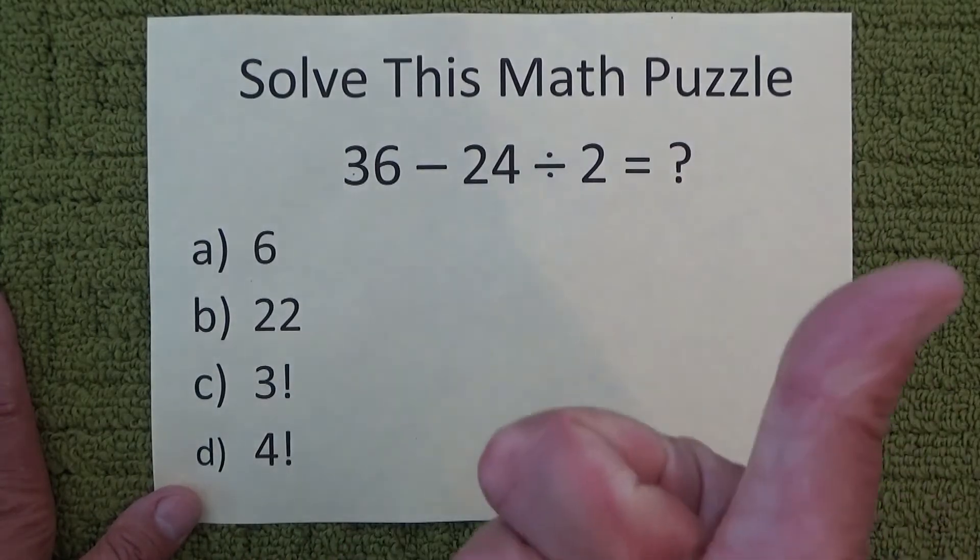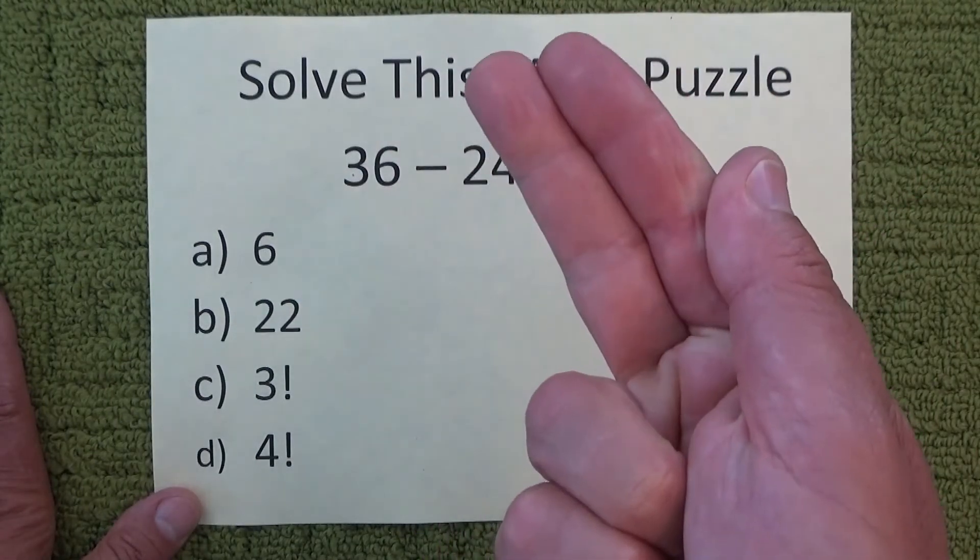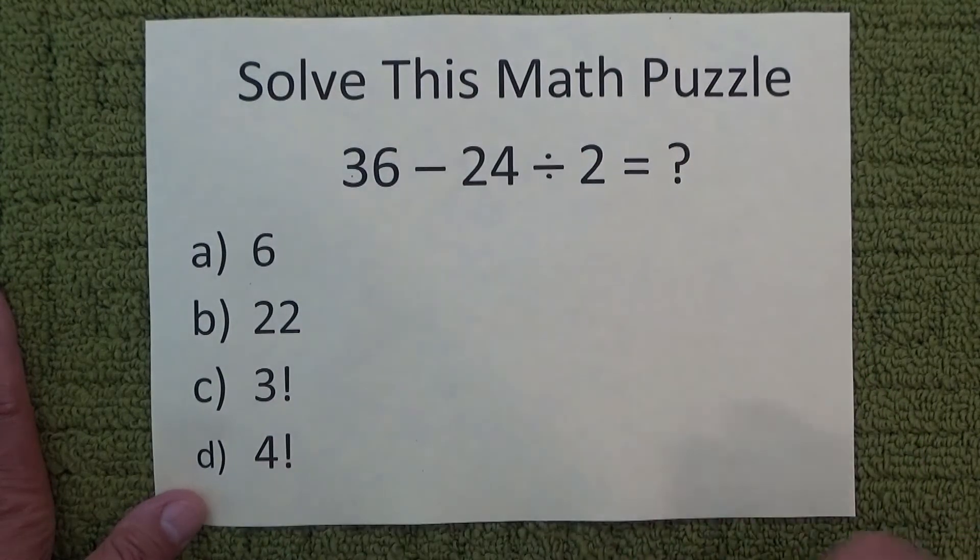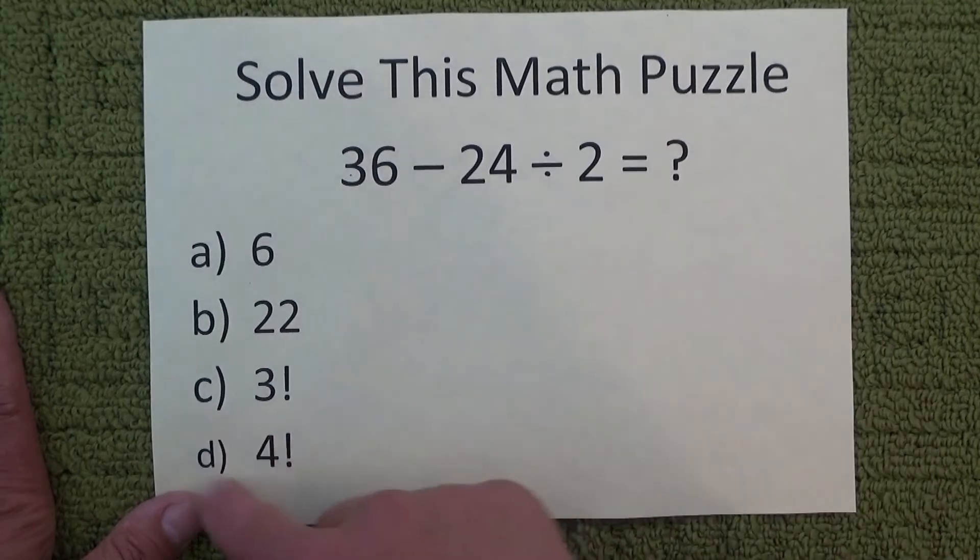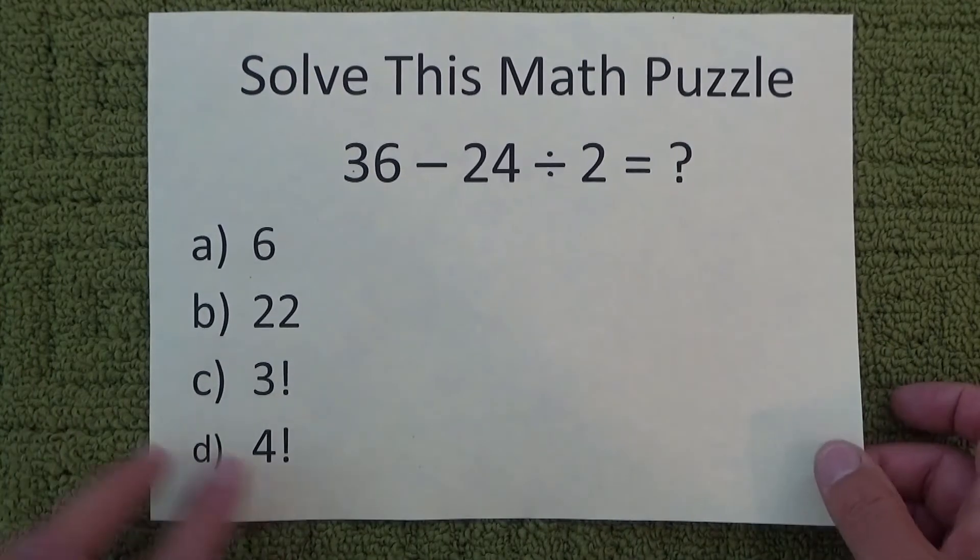4! is 4 times 3 times 2 times 1. 4 times 3 is 12, times 2 is 24, times 1 is also equal to 24. So your answer is kind of hidden there in part D as 4!.